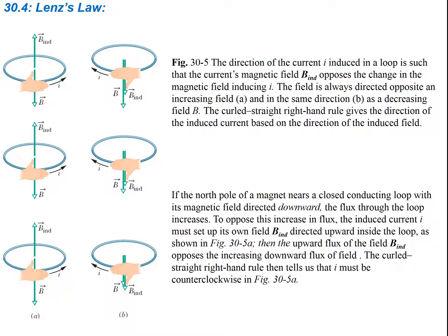The direction of the induced current I in the loop is such that the current's magnetic field B_induced opposes the change in magnetic field inducing I. The field is always directed opposite to an increasing field and in the same direction as a decreasing field. So if your field is increasing downward, the induced field will be opposite to that. But if the field is decreasing, the two fields are going to be in the same direction.